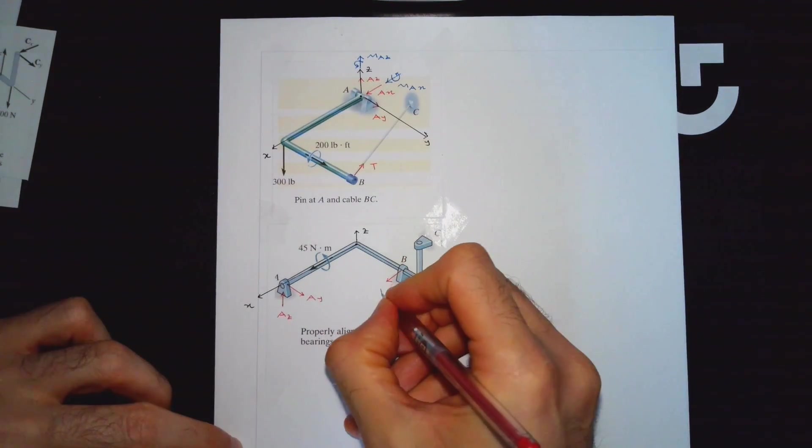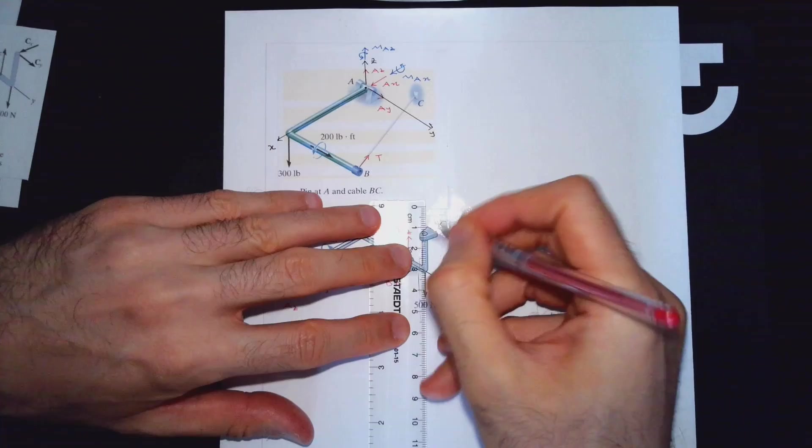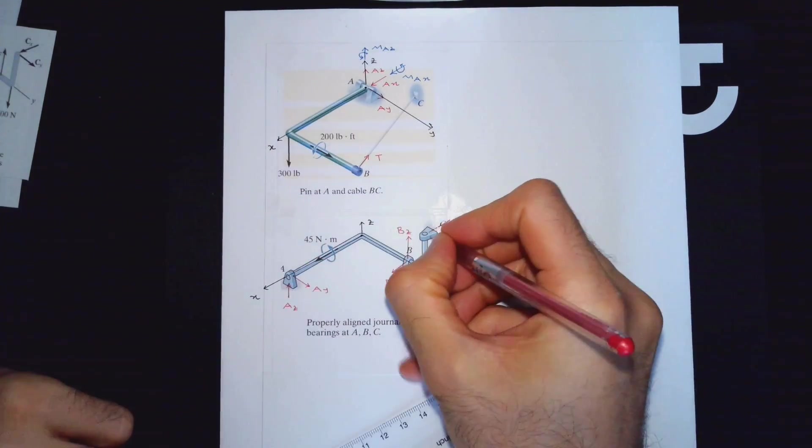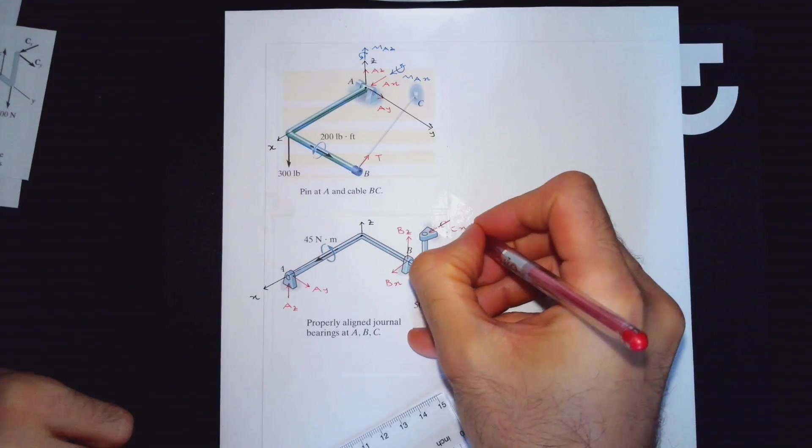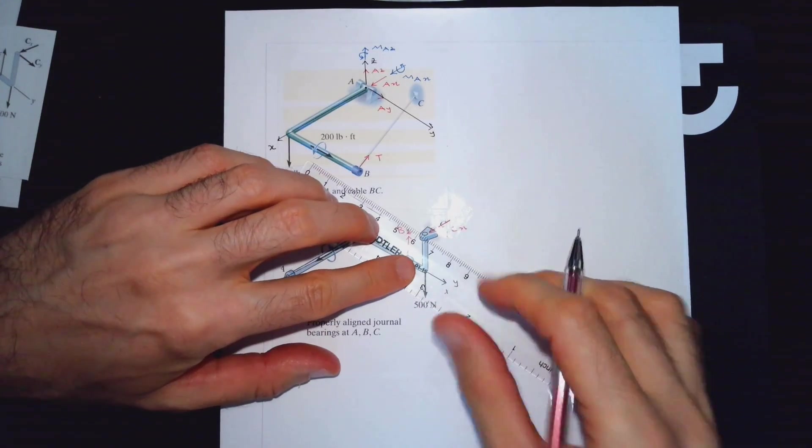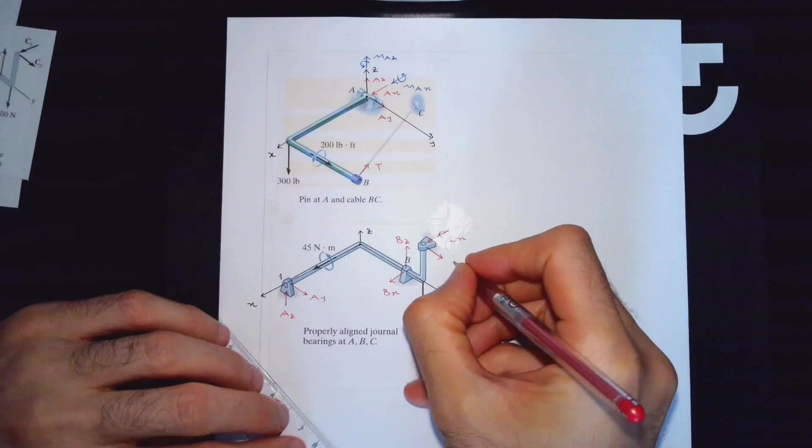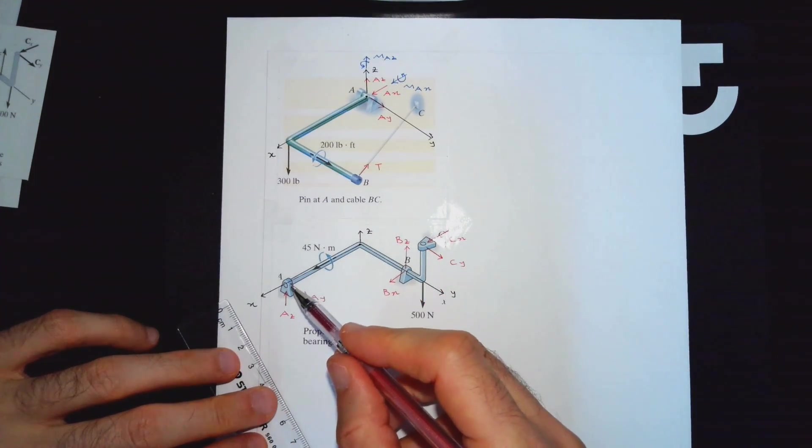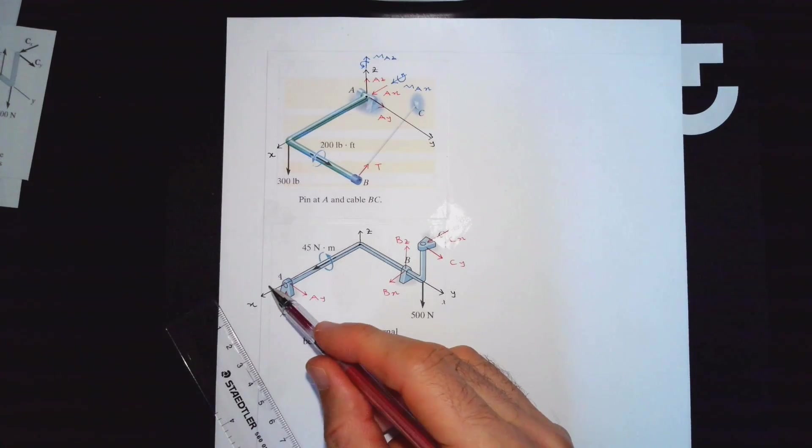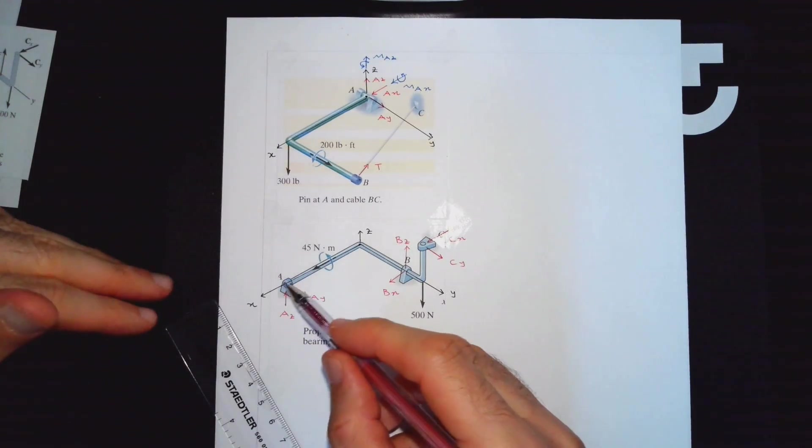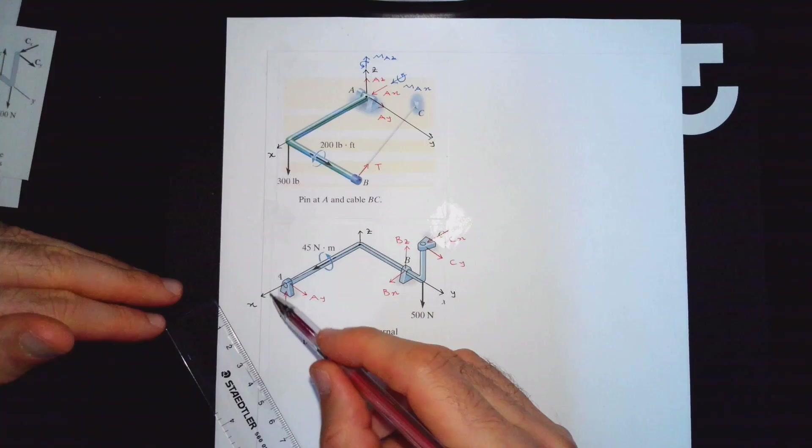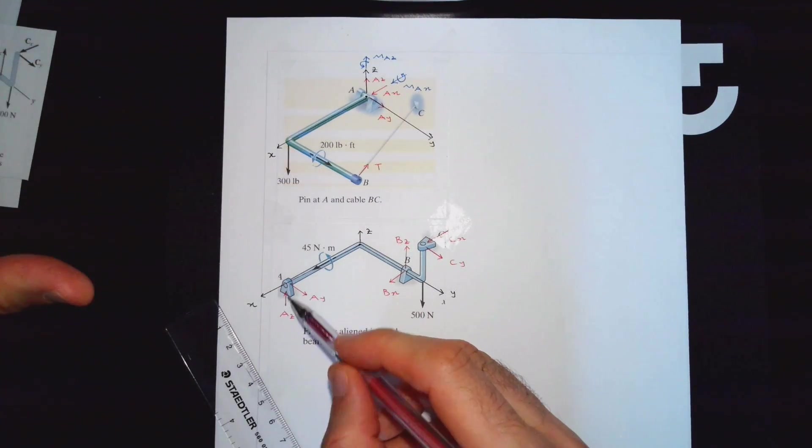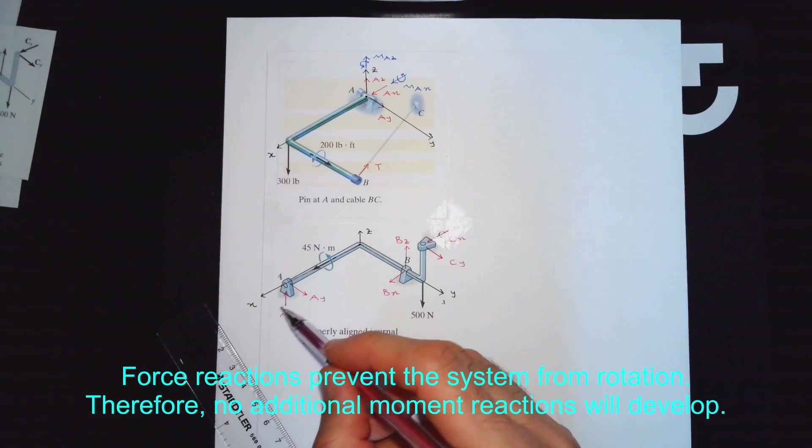But I am going to have this reaction which is CX. I'm going to have CY. Again, directions I'm just assuming some directions. In terms of moment reactions, for example here rotation about X-axis is free, it can rotate. If this was a square shaft you would develop moment about X-axis, but here it's a round shaft, no moment. So no moment will be developed.